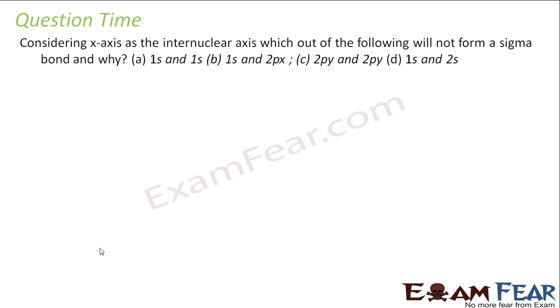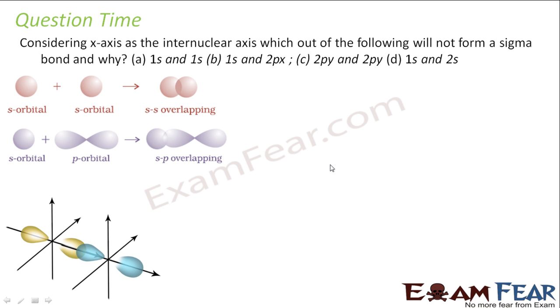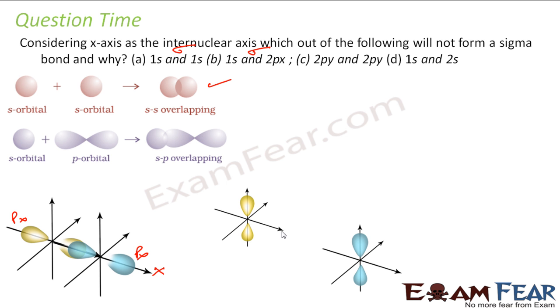We have this x-axis as the inter-nuclear axis which will form and not form a sigma bond. Let's see this. If you talk about 1s and 1s, it will always be sigma. S and P is always sigma. Now since x is my inter-nuclear axis, this is my Px, so Px and Px forms sigma bond. This is my Py and Py, so if you see this Py and Py forms a pi bond. And S always forms sigma bonds.